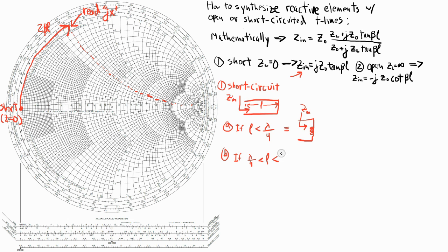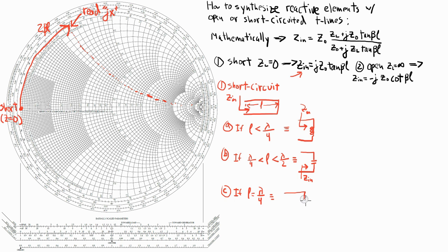If the length is more than a quarter wavelength but less than half a wavelength, then I end up on the bottom half of the Smith chart and I've just synthesized a capacitor. And if my length is equal to, or very nearly equal to, a quarter wavelength, then I've synthesized a shunt LC resonator. I know that the impedance looking into a shunt LC resonator at the resonant frequency is an infinite impedance — an open — and that agrees with where I would end up on the Smith chart.